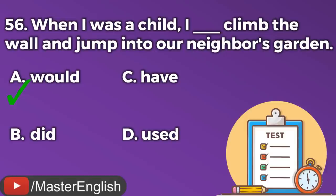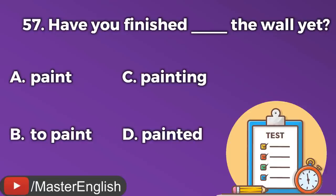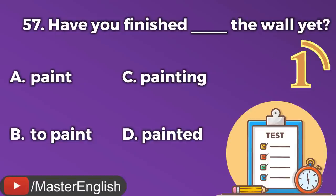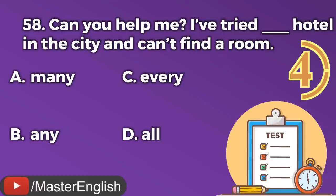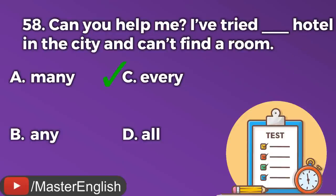Question number fifty-seven. Have you finished ___ the wall yet? A: Paint. B: To paint. C: Painting. D: Painted. The correct answer is C: Painting. Have you finished painting the wall yet? Question number fifty-eight. Can you help me? I've tried ___ hotel in the city and can't find a room. A: Many. B: Any. C: Every. D: All. The correct answer is C: Every. I've tried every hotel in the city and can't find a room.